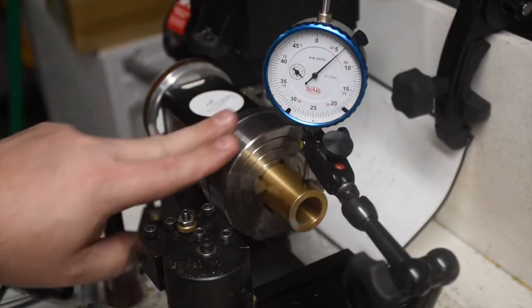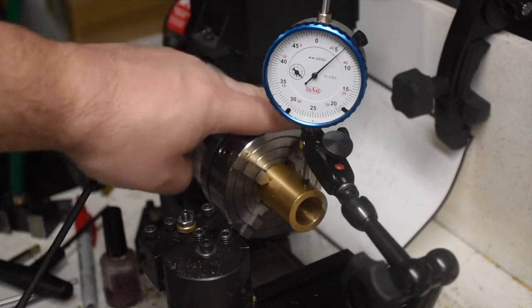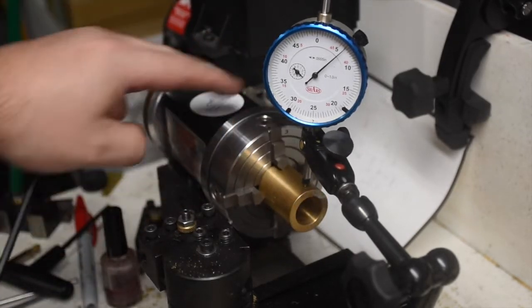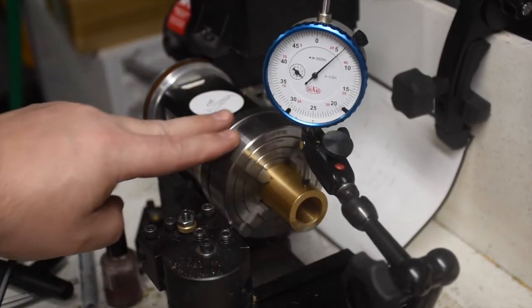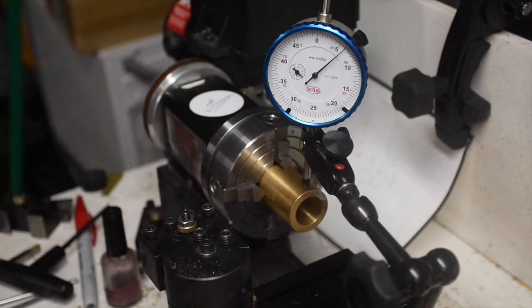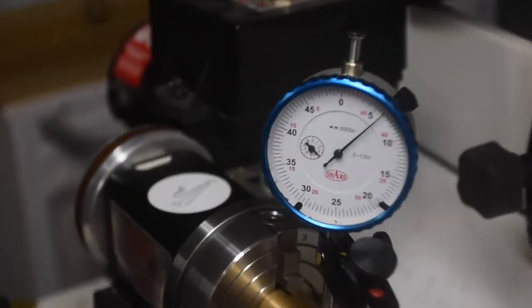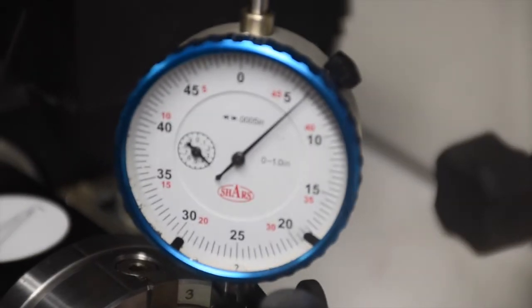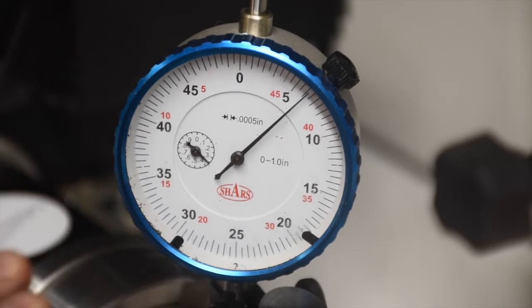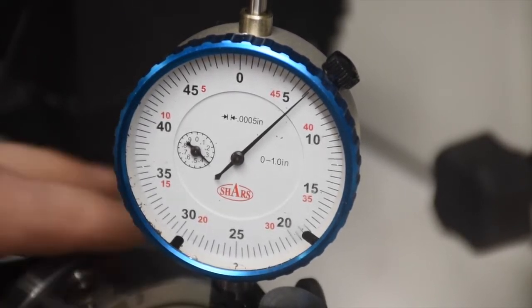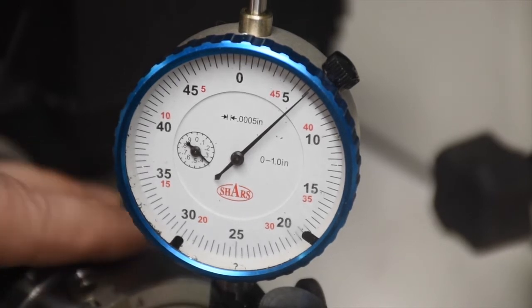Now if you're out a lot on four jaw, multiple jaw independent chucks, you can end up chasing your tail. Especially if the high spot is in between jaws, that can take up your afternoon. So I'll fiddle with this a little bit and I'll come back and show you it all dialed in. Here we are back with this all dialed in. Didn't take too long, took me about five minutes. I'll zoom in here on the indicator so you can see exactly what's moving and what's not.